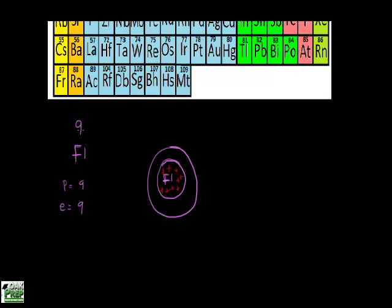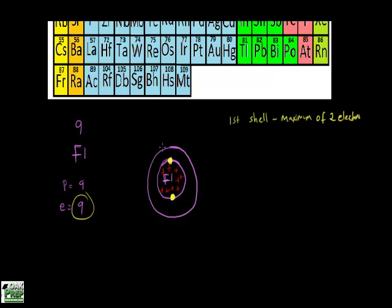On the first shell, the maximum number of electrons that can be held is two — for every element it's always going to be two. So for fluorine's nine electrons, we put two on the first shell. We still need seven more, so we draw another shell and place seven electrons on it.